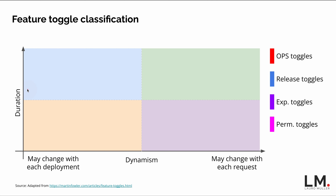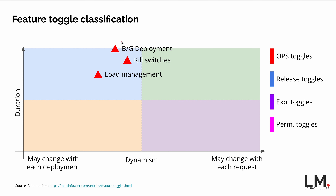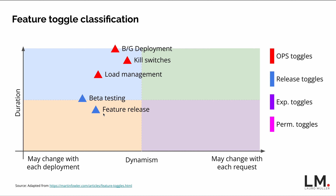There are different types of feature toggles depending on how long they stay in the code and how often they change — whether that's per deployment or per request. On a chart, kill switches sit on the lower dynamism side but with very long duration — we want them available whenever needed. Blue-green deployments are similar: long-lived and part of the application's release process, ensuring that a breaking release doesn't get heavy traffic.